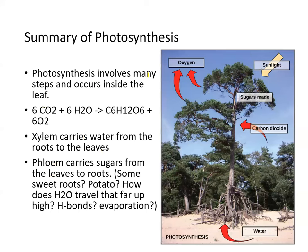Photosynthesis involves many steps and occurs inside the leaf. It basically converts six CO2 molecules and six water molecules to produce one single molecule of glucose and six molecules of oxygen. The xylem is the vasculature that transports water from the roots all the way up to the leaves, and the phloem carries sugars produced in the leaves to the rest of the entire plant.